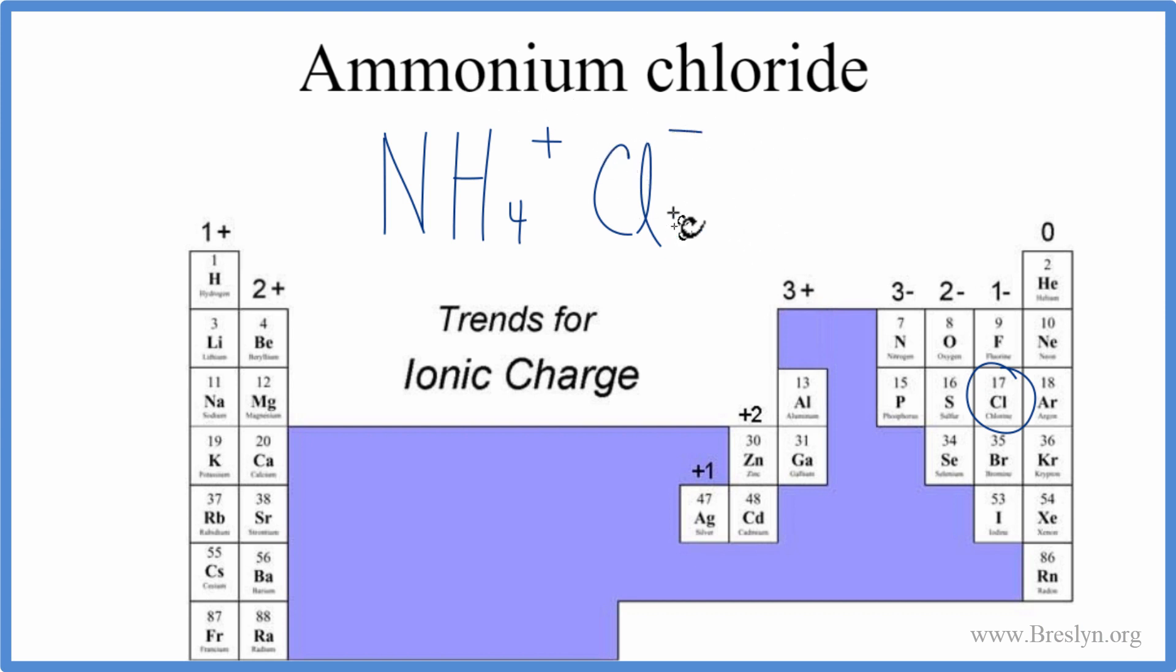Let's clean it up a little bit, get rid of those charges. And there you have it. The formula for ammonium chloride, NH4Cl.